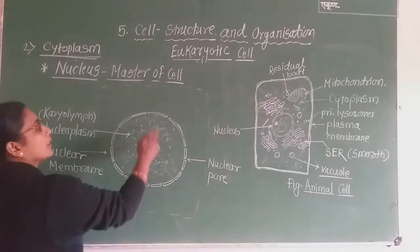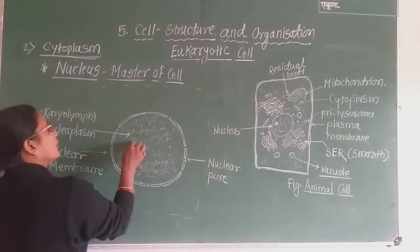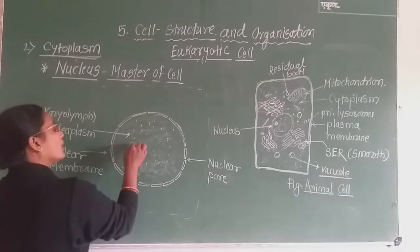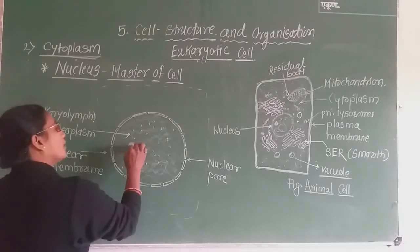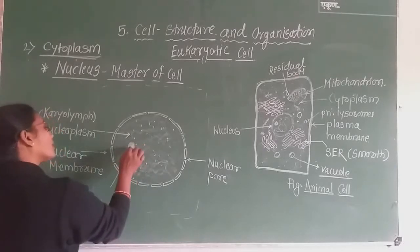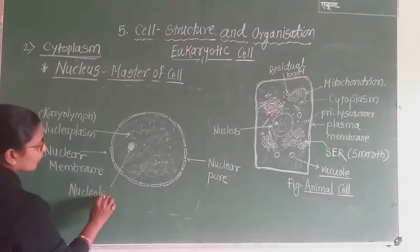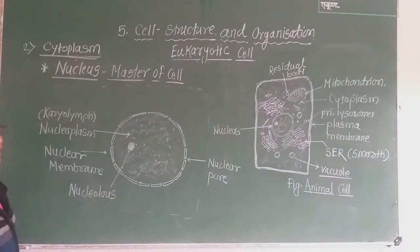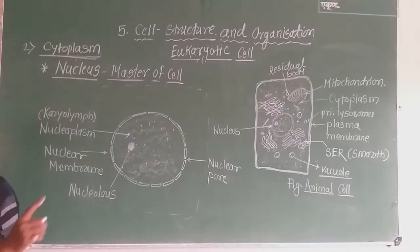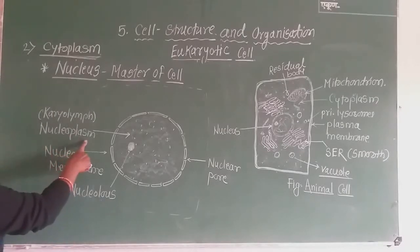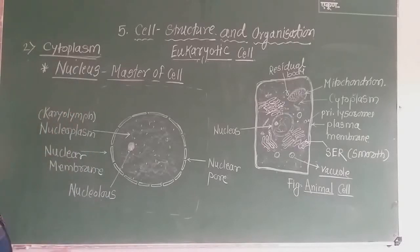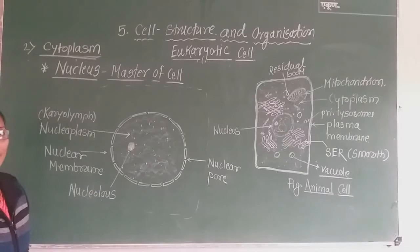Now inside this nuclear membrane, there is the presence of another spherical body. This spherical body is called as the nucleolus. Nucleoplasm is the cytoplasm of the nucleus, and nucleolus is the nucleus of the nucleus.